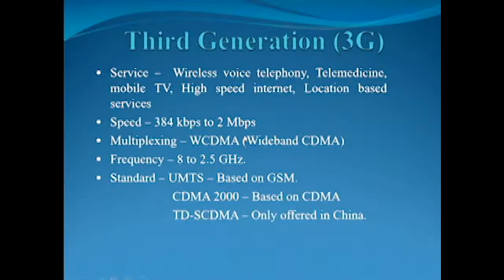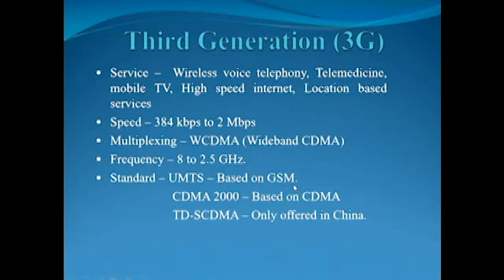The speed of third generation is 384 kilobytes per second to 2 megabits per second. Multiplexing: WCDMA, that means Wideband Code Division Multiple Access. Frequency: 800 megahertz to 2.5 gigahertz. Standards: UMTS based on GSM, CDMA2000 based on CDMA, and TD-CDMA which is offered only in China.